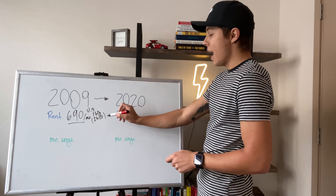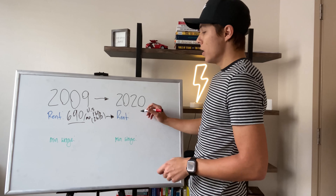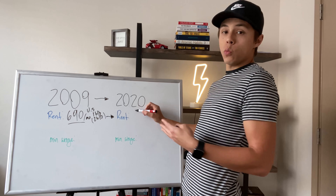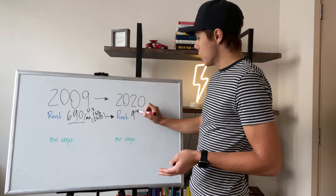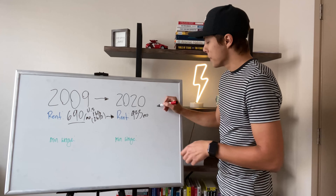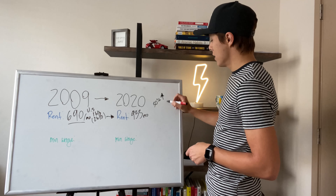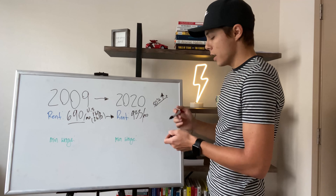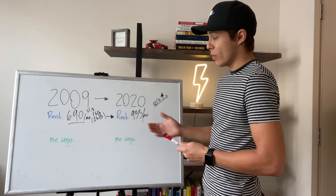So essentially we're looking at $690 in the US per month for rent in 2009. As we get into 2020, the price has been going up because mortgage rates are going up, so rent should be going up as well. Rent in 2020 is actually $933 per month. So it's increased from $690 to $933 — that's roughly a 30% increase in rent per month.